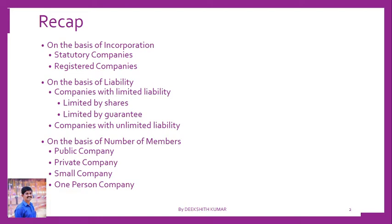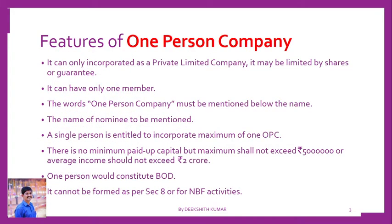Today, before going to further classification, let us see what a one-person company is and the features of one-person company. A company which has only one person as a member is called a one-person company as per Section 2, subsection 62 of the Companies Act 2013. This one-person company, like any other company, is a legal entity distinct from its members.